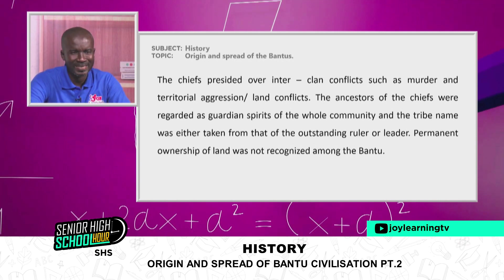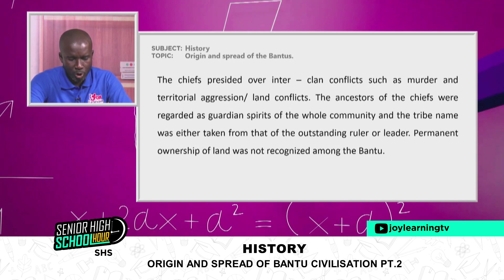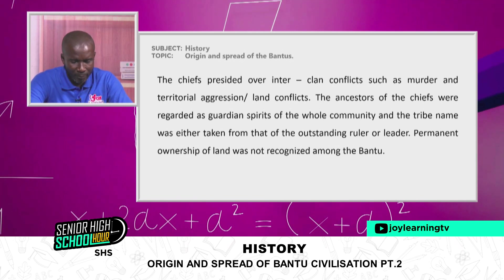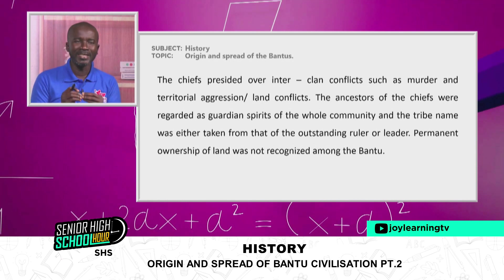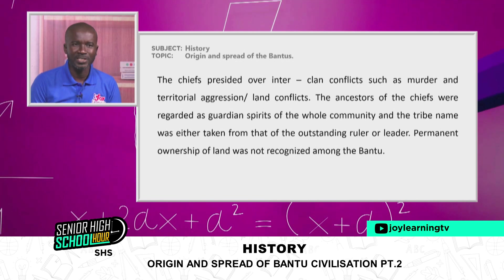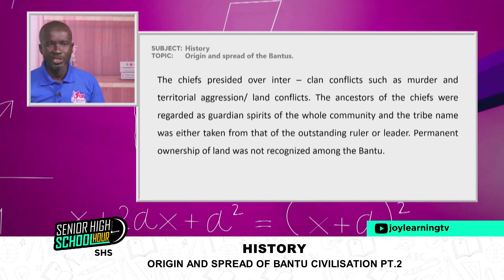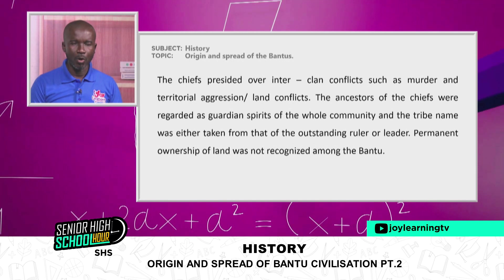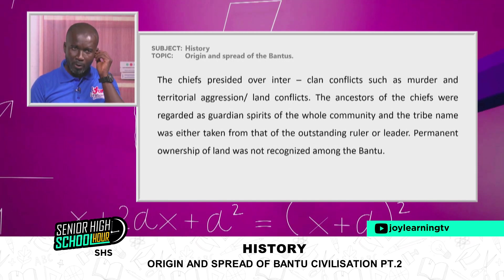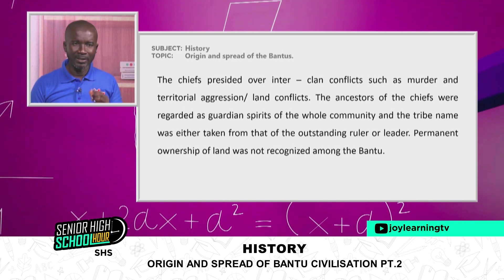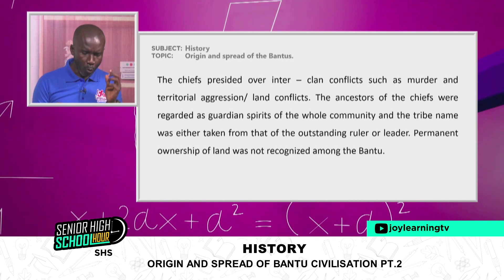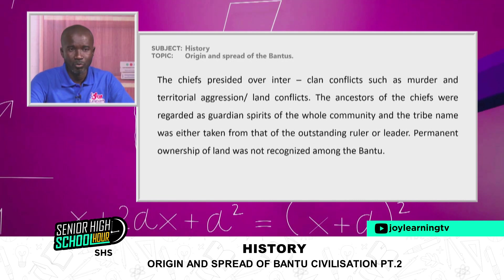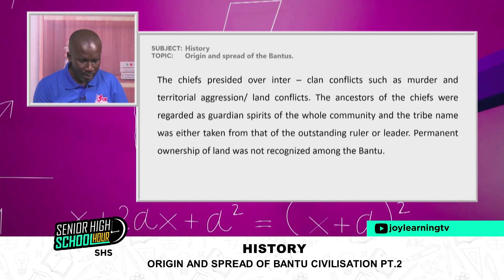The ancestors of the chiefs were regarded as guardian spirits of the whole community, and the tribe name was often taken from that of an outstanding ruler or leader. Permanent ownership of land was not recognized among the Bantu — there was always communal ownership. The Ubuntu spirit — we live for each other — meant nobody owned anything for himself or herself alone.